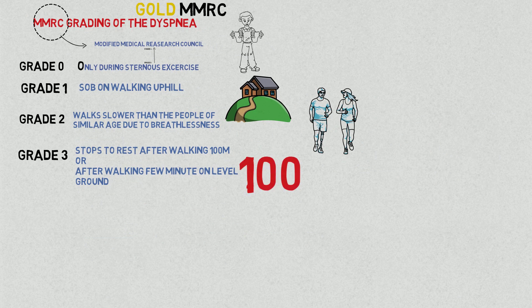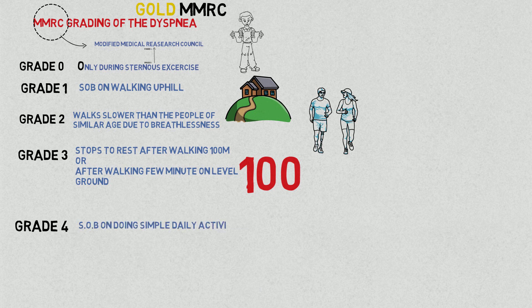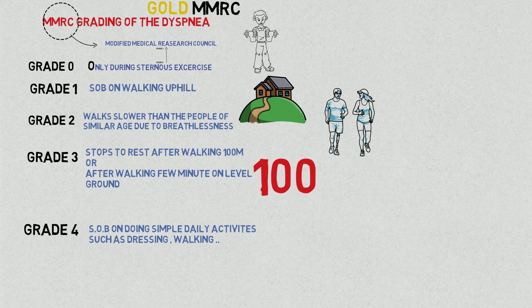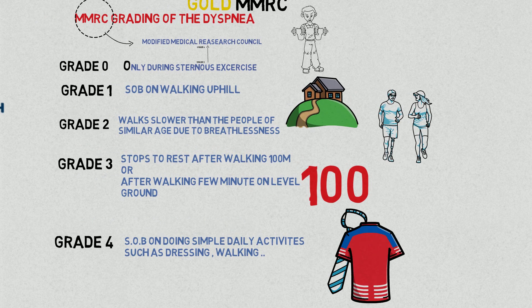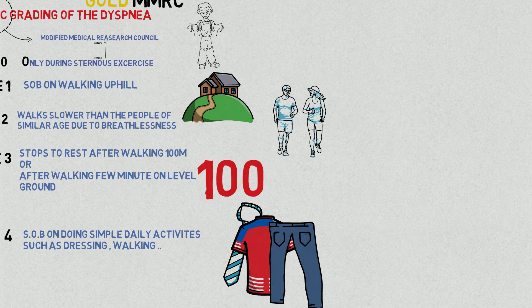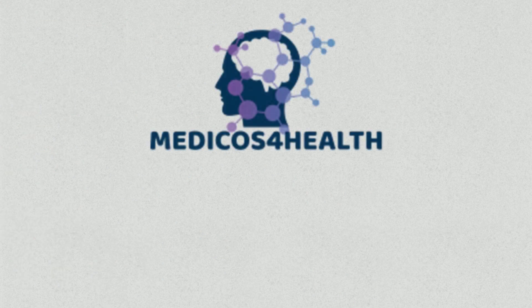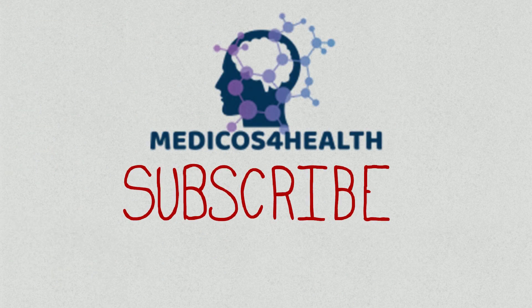And at last there is grade 4, which is most severe. In grade 4, the person experiences shortness of breath on doing simple daily activities such as dressing, walking, etc. So this was all about MMRC grading of the dyspnea. Thank you.